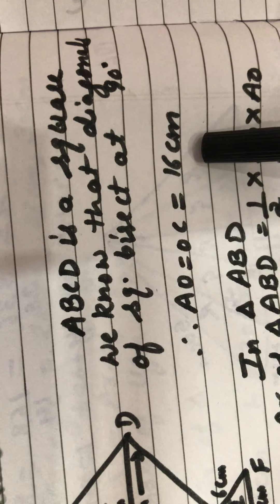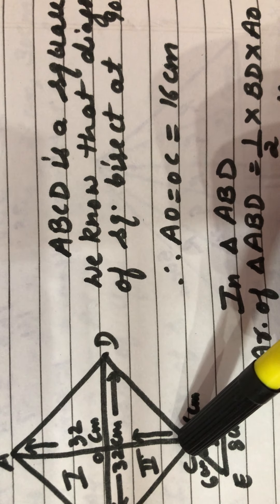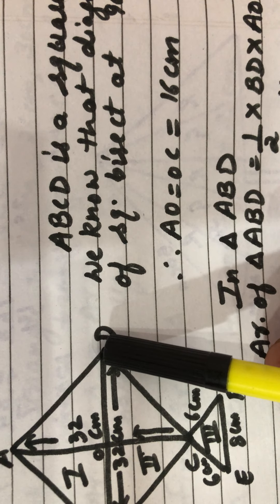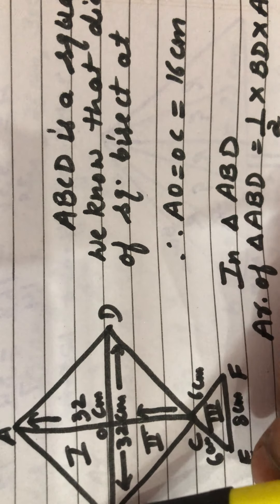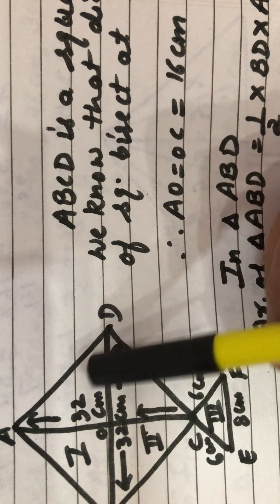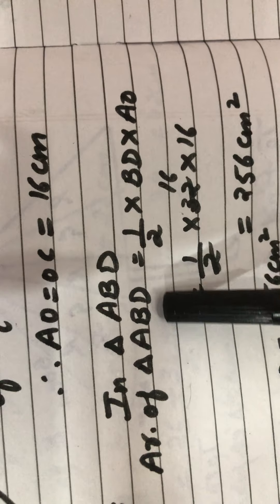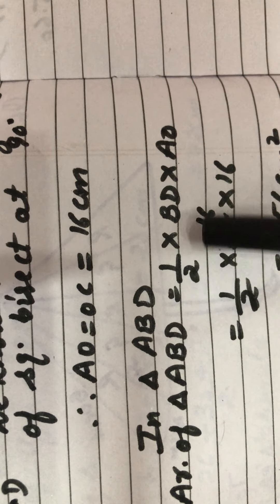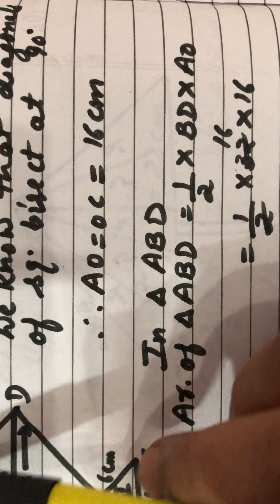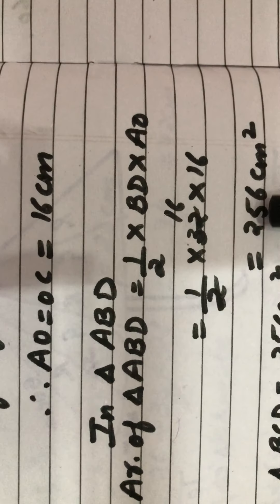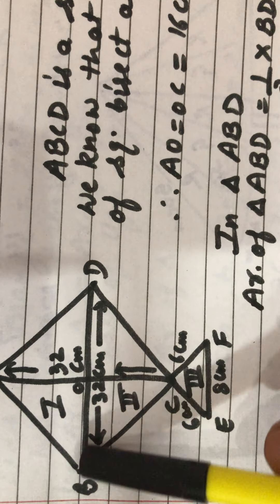In triangle ABD, AO is the height and BD is the base. Using the formula: area = ½ × base × height = ½ × 32 × 16 = 256 cm². Similarly, in triangle BCD, base BD = 32 cm and height OC = 16 cm, so area of triangle BCD = ½ × 32 × 16 = 256 cm². So the first part area is 256 cm² and the second part area is also 256 cm².